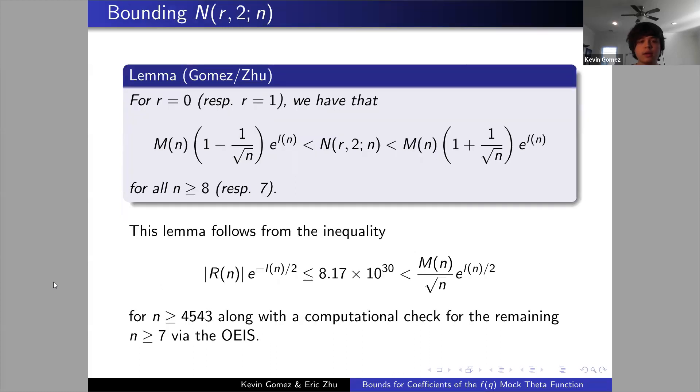Now that we actually have the main growth term for N_r(2,n), we can attempt to resolve the conjecture completely. We first have this lemma that puts N_r(2,n) into a nice window, which is useful for showing the convexity. This lemma follows pretty easily from an inequality on the effective bound on the error term. We simply have to find the n such that this term is bigger than the explicit constant. This turns out to hold for all n bigger than 4543.